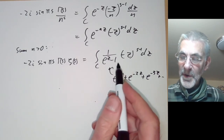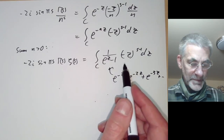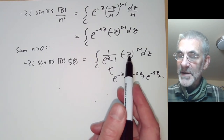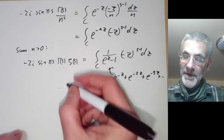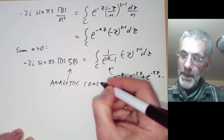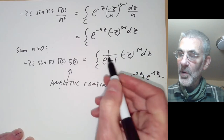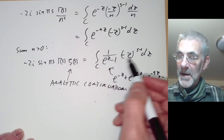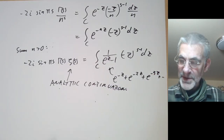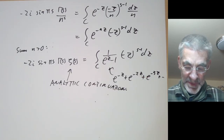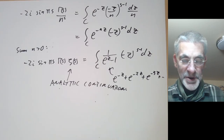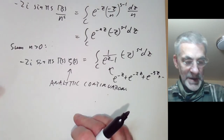So we have a formula for zeta(s), and this actually gives the analytic continuation of zeta(s) to all complex s, because the right-hand side behaves well for all complex s. In order to get the functional equation, we use the Bromwich contour.